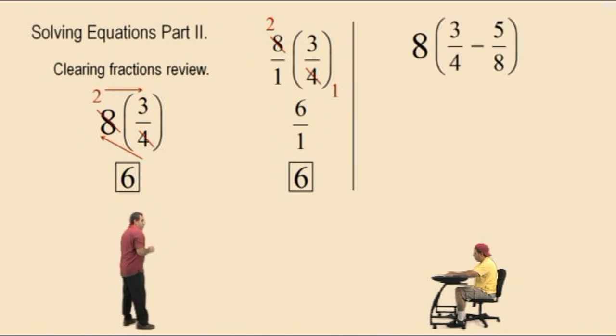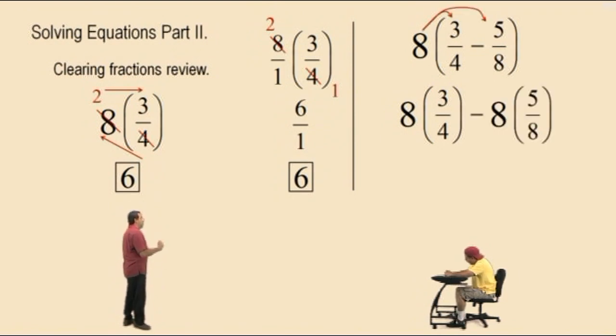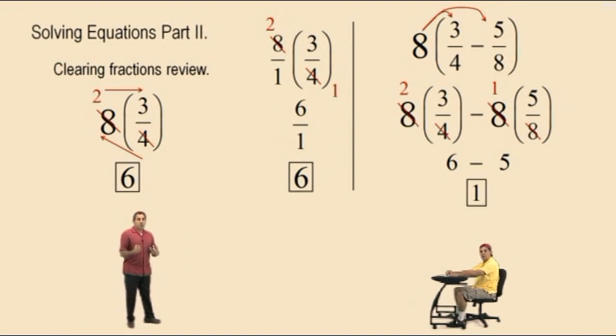So let's go ahead and do this expression over here. We have the number 8 being multiplied to the difference of 3 fourths and 5 eighths. Well, by the distributive property, we're going to go ahead and distribute the 8 to the 3 fourths, bring down your subtraction, and distribute the 8 to the 5 eighths. Well, notice 8 was the lowest common denominator for those two fractions that were in the parentheses, right? Therefore, we know that LCD is going to be divisible by those denominators, right? So here it comes. 8 divided by 4 is 2, 2 times 3 is 6. Bring down your subtraction. 8 divided by 8 is 1, 1 times 5 is 5, and 6 subtract 5 is 1.